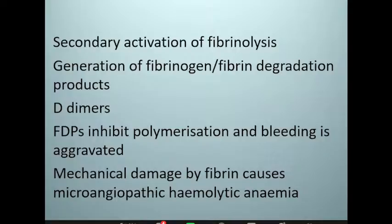Some of these degradation products aggravate bleeding because they inhibit polymerization. Because fibrin is present in the microvasculature, the fibrin strands will damage red cells as they traverse through — the red cells get sheared by the fibrin, producing fragments that we see on the peripheral blood film. This fragmentation of red cells is a key finding.